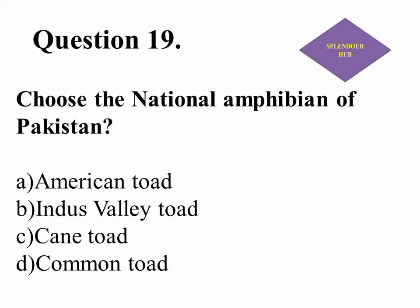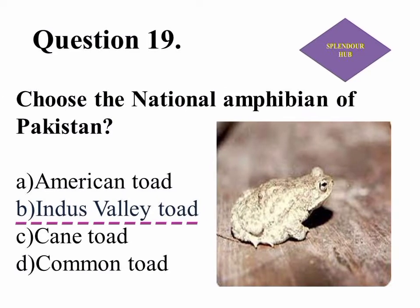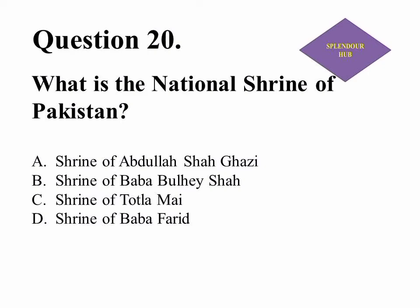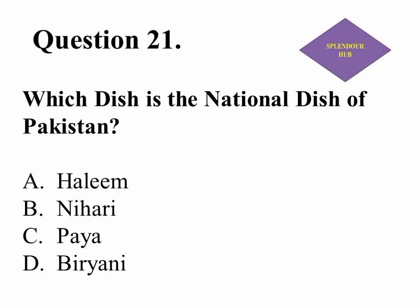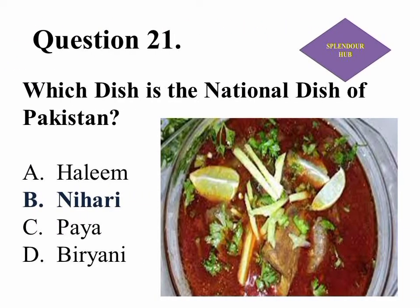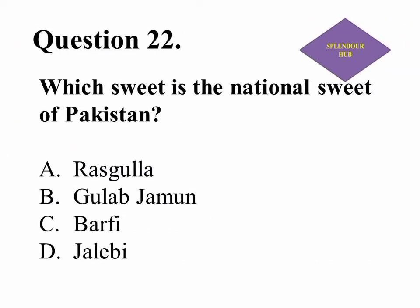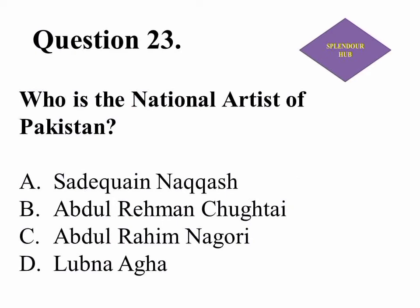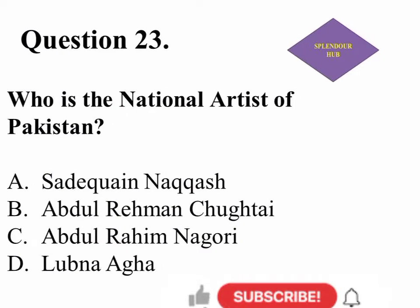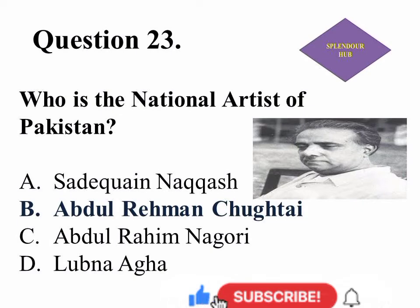Question 19: Choose the national amphibian of Pakistan. Answer is Indus Valley toad. Question 20: What is the national shrine of Pakistan? Answer is the shrine of Baba Farid. Question 21: Which dish is the national dish of Pakistan? Answer is Nihari. Question 23: Who is the national artist of Pakistan? Answer is Abdul Rahman Chughtai.